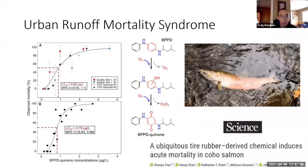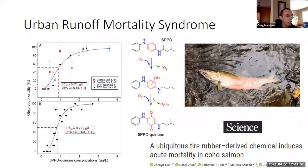If you're in this session you're likely familiar with urban runoff mortality syndrome. Stephanie Blair just talked about it in the last session and Jen McIntyre will be talking about her research tomorrow morning as the keynote. Here's a quick summary just in case. Urban runoff mortality syndrome, also called URMS, or pre-spawn mortality, is when coho salmon die in urban streams before spawning during the fall migration.